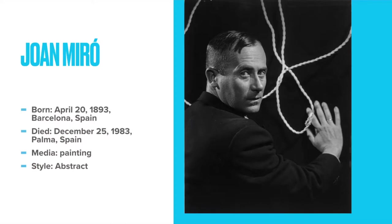Right here is just a picture of Joan Miró. He was born April 20th, 1893, in Barcelona, Spain, and he died December 25th, 1983, in Palma, Spain. He was very famous for his paintings, but he also did lots of sculptures and drawings, and the style he preferred — what I see most when doing my research on him — was abstract.